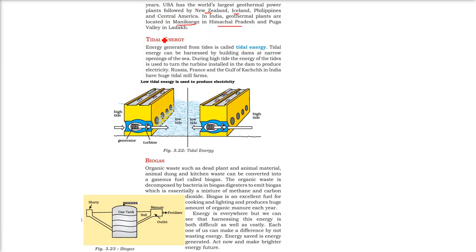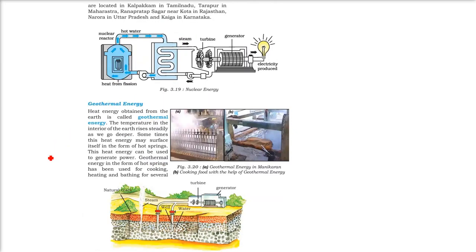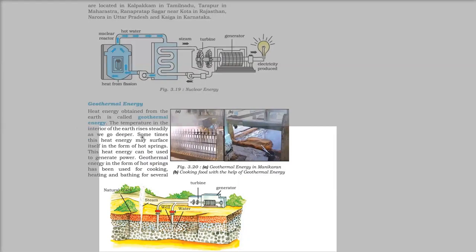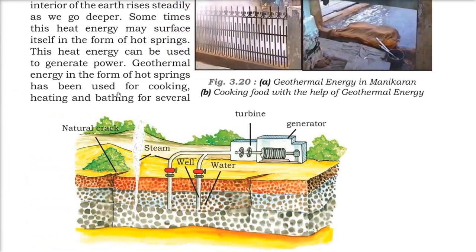Here is how geothermal energy works: through natural cracks in the earth, steam comes up. This steam is used along with well water to rotate a turbine, which is connected to a generator that produces electricity.